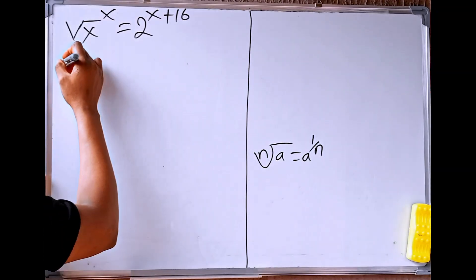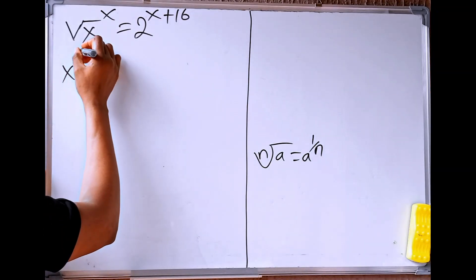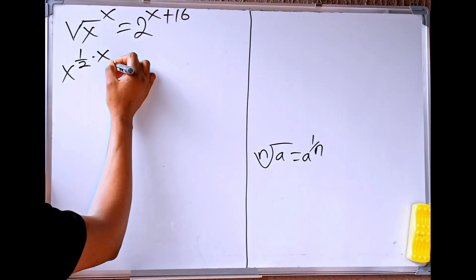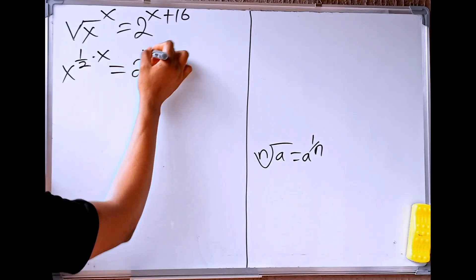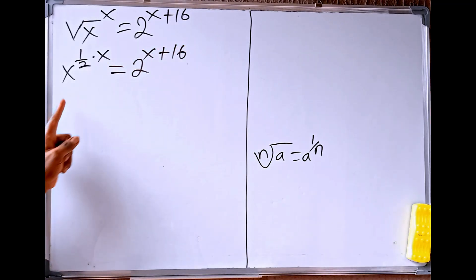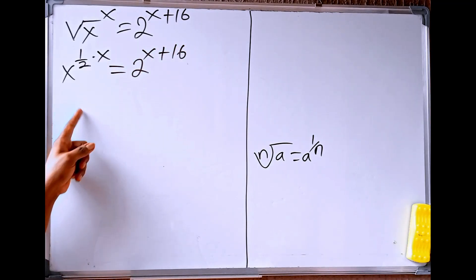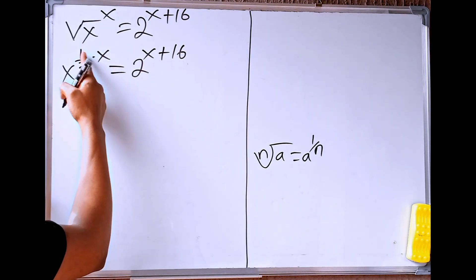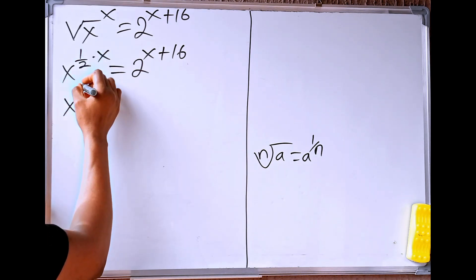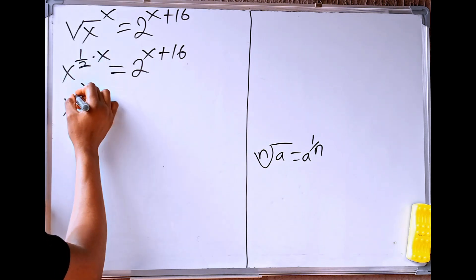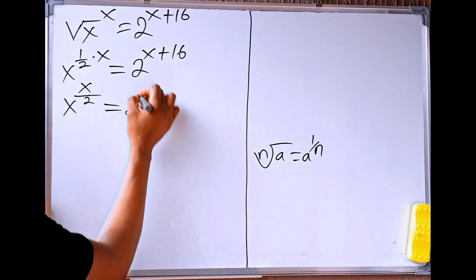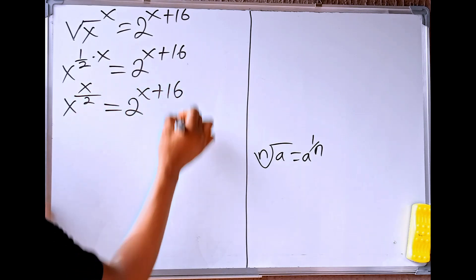we are going to have x to the power of 1 over 2, then times x, will be equal to 2 to the power of x plus 16. Now, let's multiply these two powers. We'll have x times 1 over 2, giving us x divided by 2, and this is equal to 2 to the power of x plus 16.